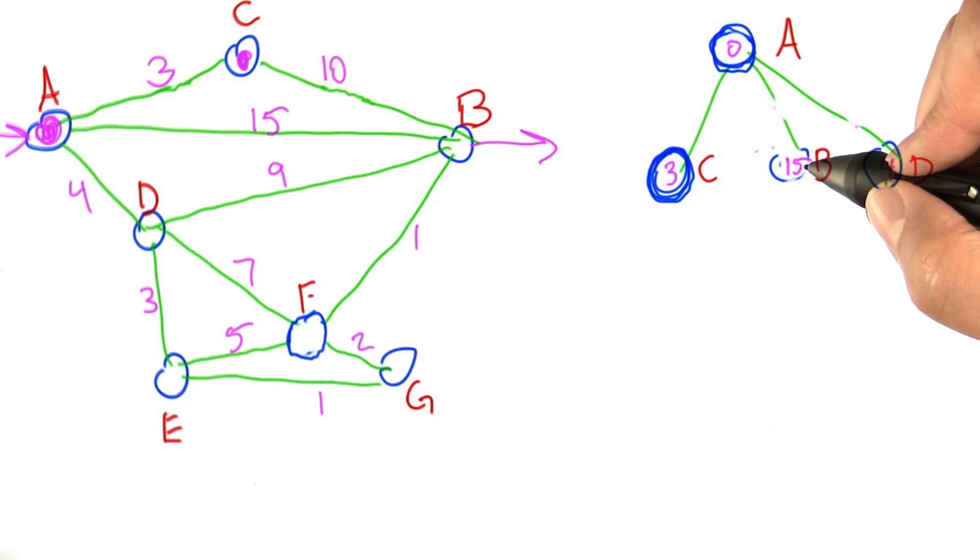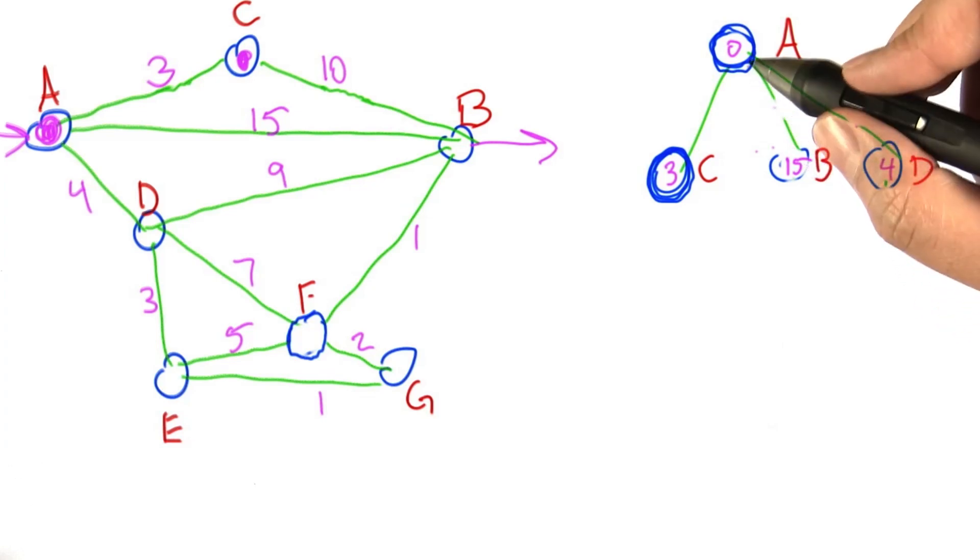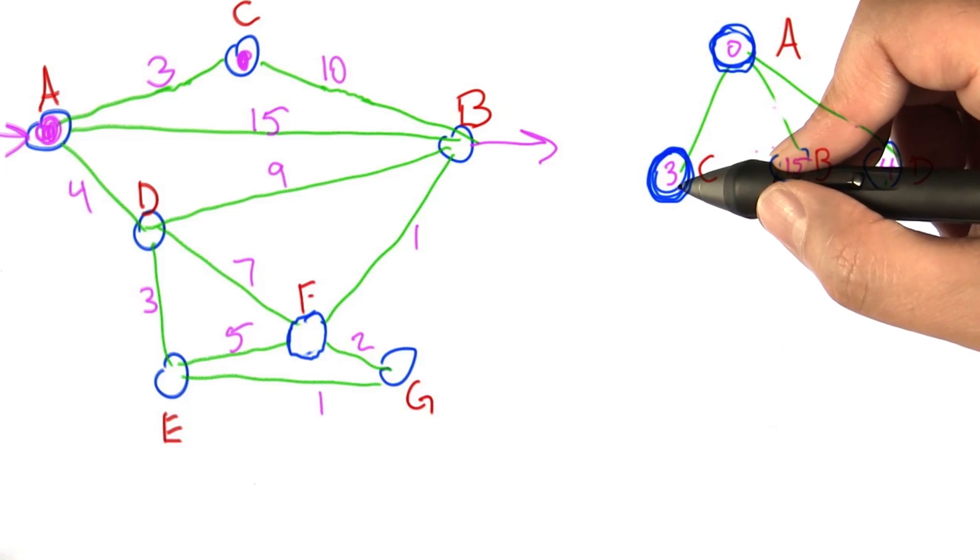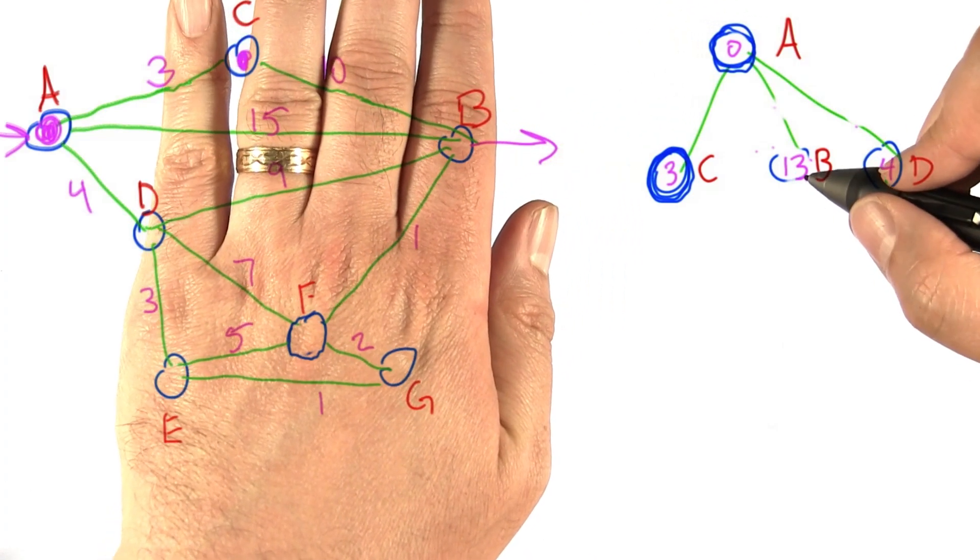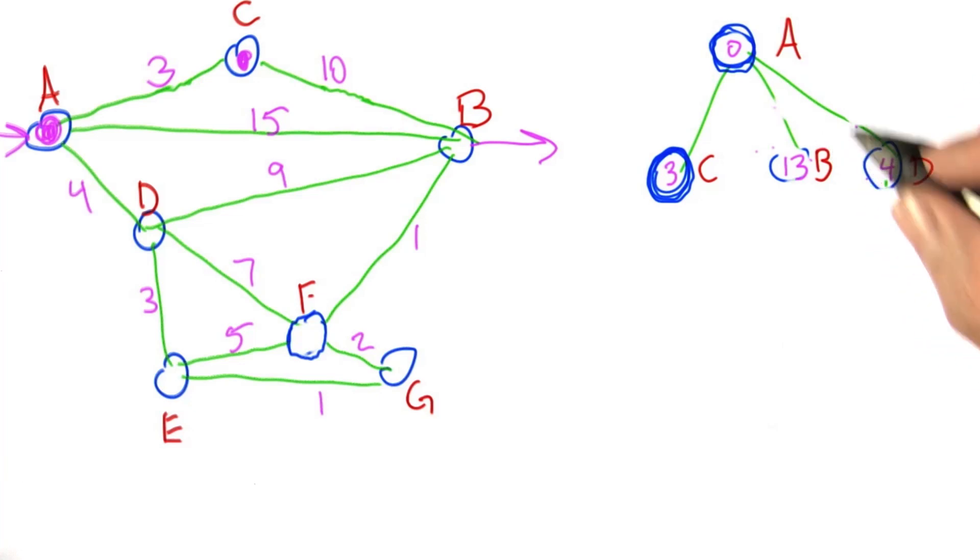We now know that there's a path that actually can get us there in 13, right? This 10 edge plus the 3 that it takes to get to C. So we can get to B faster than 15. We can get to B in 13. Now is that the shortest possible path for B? We don't know because we know that we could get to D in 4 and maybe there's a length 1 path that would get us to B, which would be even shorter. So all we know from what we've done so far is that the shortest path from A to D is 4.